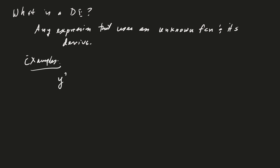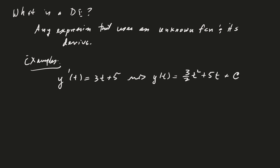y prime of t equals 3t plus 5 is a differential equation — in fact, it's the kind we looked at in calculus. If we know the derivative is 3t plus 5, we know how to solve it: y of t equals three-halves t squared plus 5t plus some arbitrary constant.